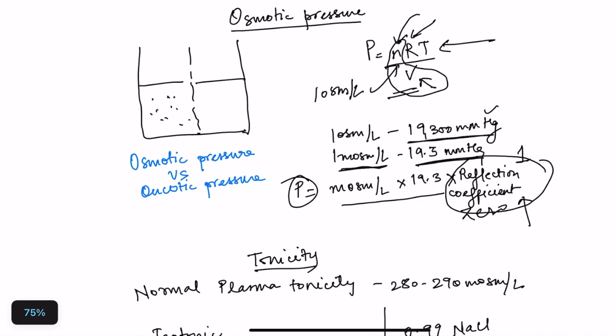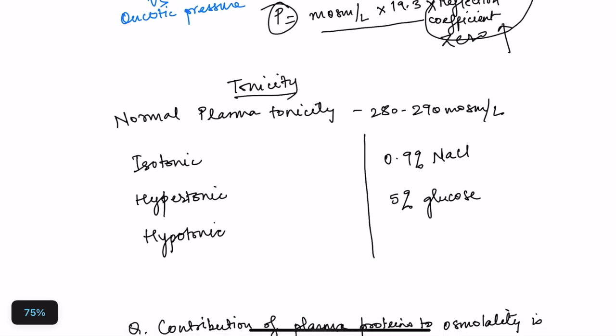Next is tonicity of the solution. Normal plasma tonicity is 280–290 milliosmoles per liter. An isotonic solution has the same tonicity as plasma. A hypertonic solution has osmolarity more than plasma — maybe 300 milliosmoles per liter. A hypotonic solution has osmolarity less than plasma osmolarity. Isotonic, hypertonic, and hypotonic are always used with respect to plasma tonicity.